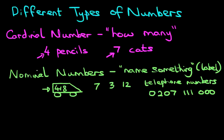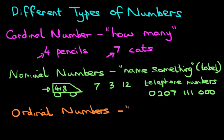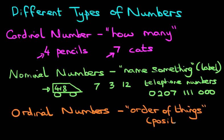So that is nominal numbers. And lastly, we're going to go through ordinal numbers. What are ordinal numbers? Ordinal numbers tell you the order of things — you can also say the position of things.